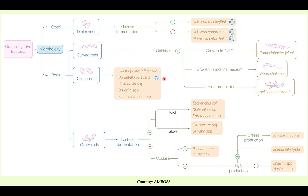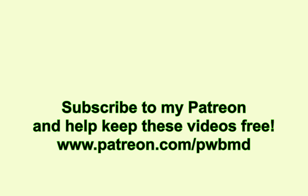So that is it for our overview. Are you pumped? I'm pumped. We're going to talk about our gram-negative diplococci first — await those videos as they come out. We're going to be talking about Neisseria and Moraxella. Neisseria is very, very important and comes up all the time on the exam. There are lots of different virulence factors you'll have to be familiar with, so those videos may be a little bit long. I will see you there.